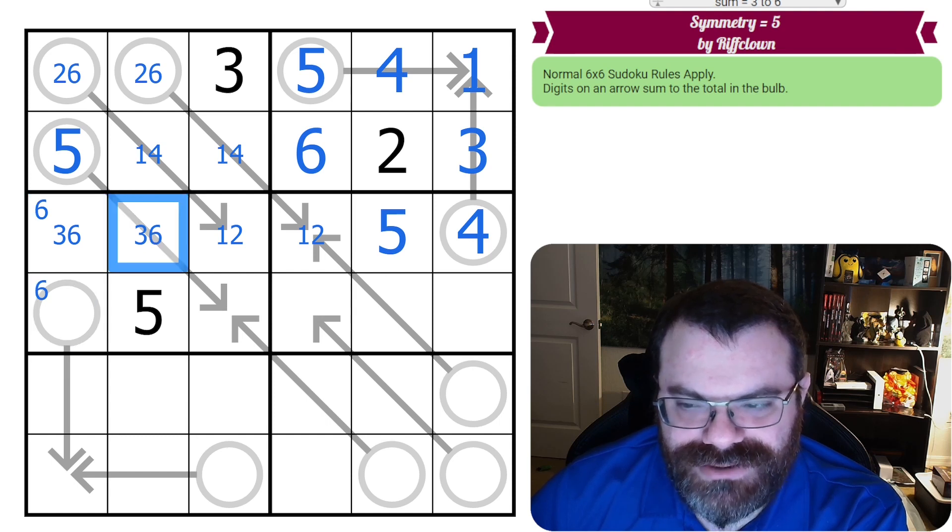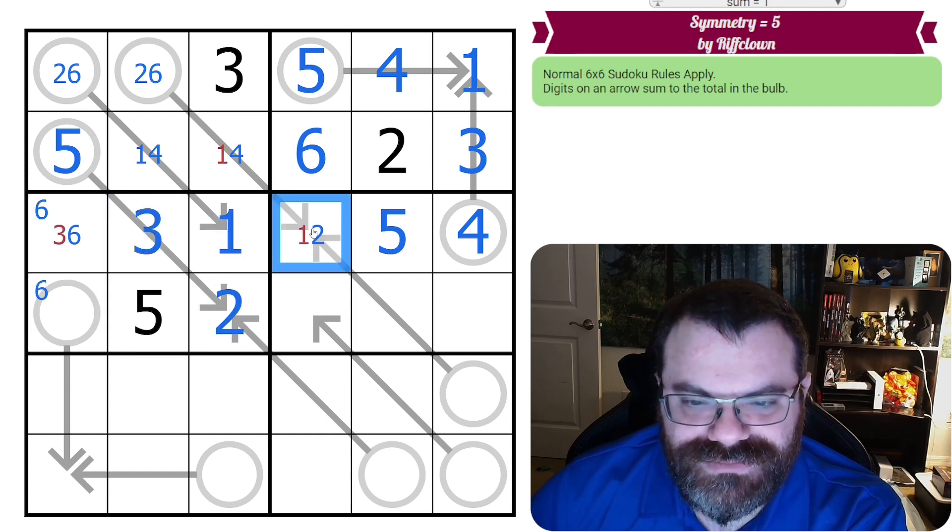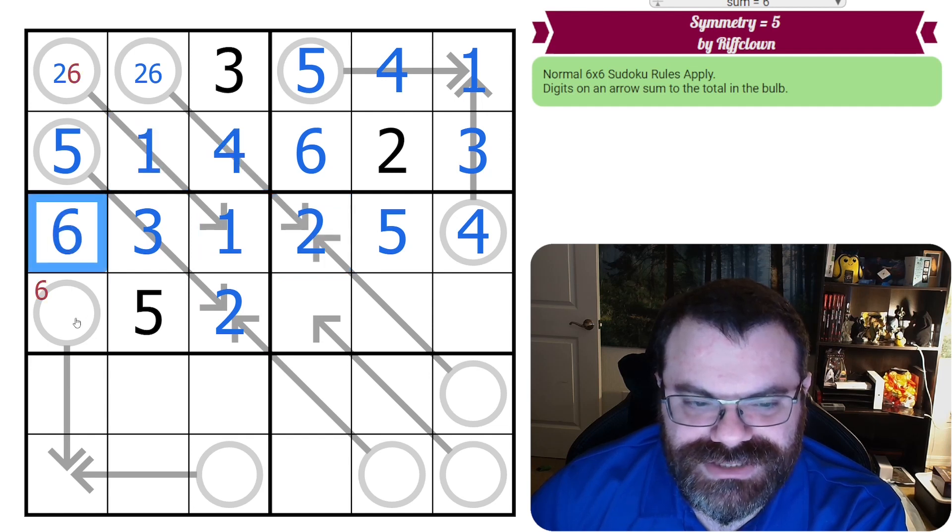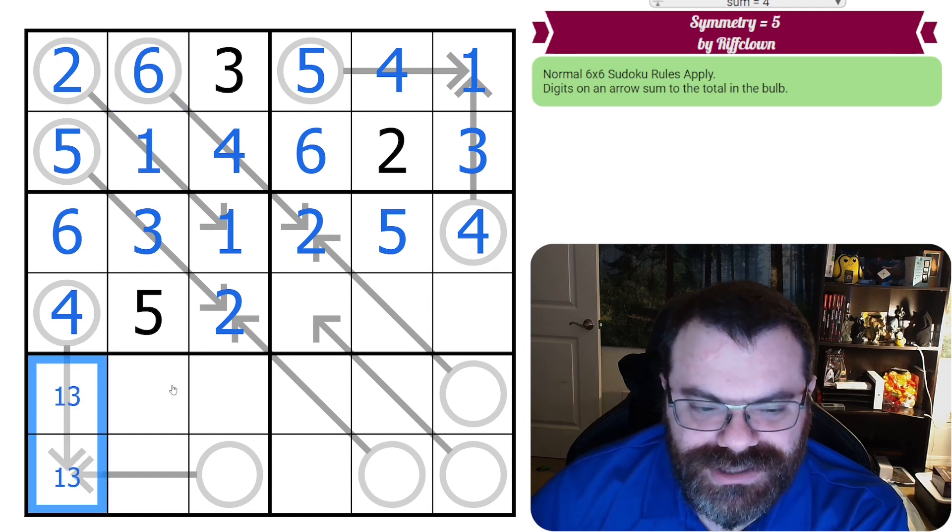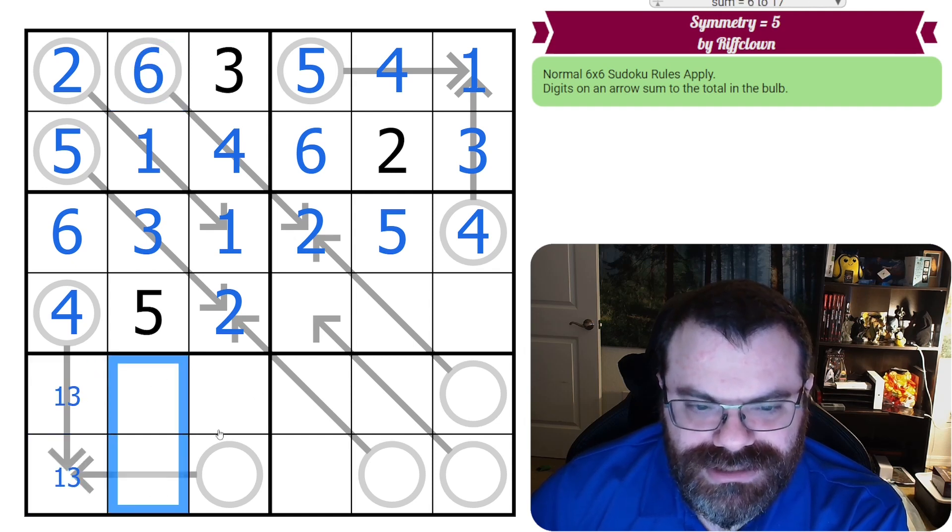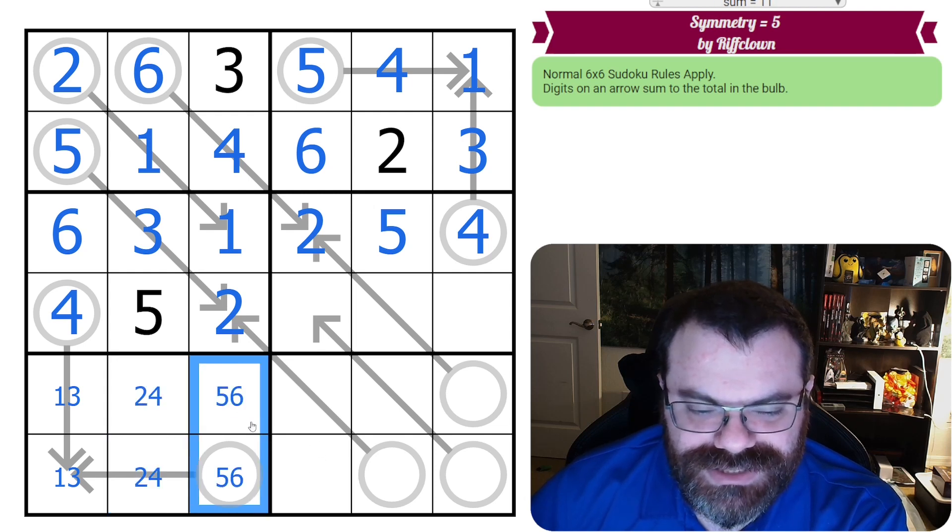And this can't be a 6 because we said 6 isn't one of these two. Yeah, 6 can't go in arrow, that's why. So that's 3, which means 3 plus 2 is 5. 1 and 2, 4 and 1. Very nice. 6. So this is a 4. There's only one way to add a 4, which is a 1, 3 pair. This is a pair as well. This is 2 and 4, and this is 5 and 6.